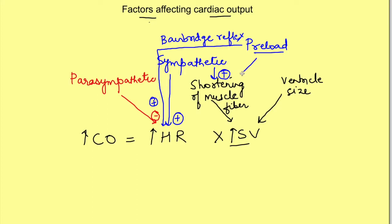Preload also increases the stroke volume by increasing the shortening of the muscle fiber. This happens because of the Frank-Starling law. Frank-Starling law says that force of contraction is directly proportional to the initial length of the muscle fiber. So whenever preload increases, it stretches the muscle fiber — that is, increases the initial length of the muscle fiber — causing increase in the shortening of the muscle fiber. So preload is already incorporated into this equation.